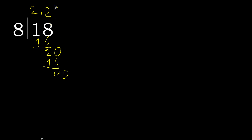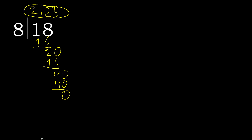40. 8 multiplied by 5 is 40. Subtract — remainder is 0. Therefore finish it. 18 divided by 8 is 2.25.